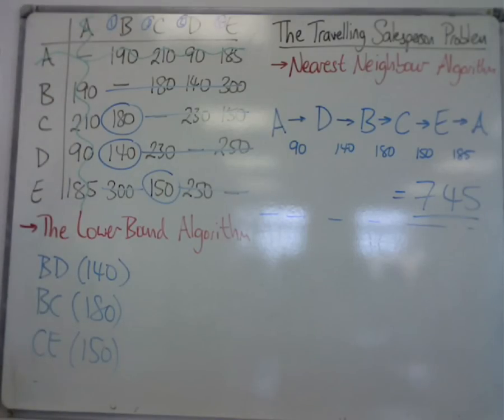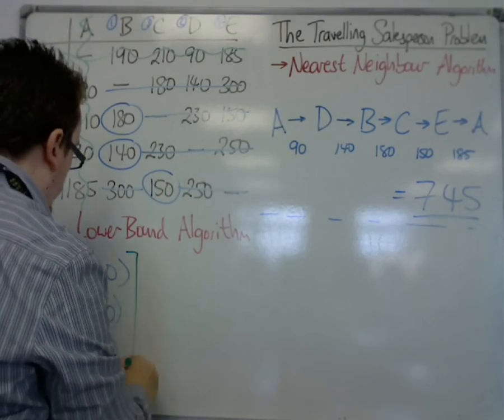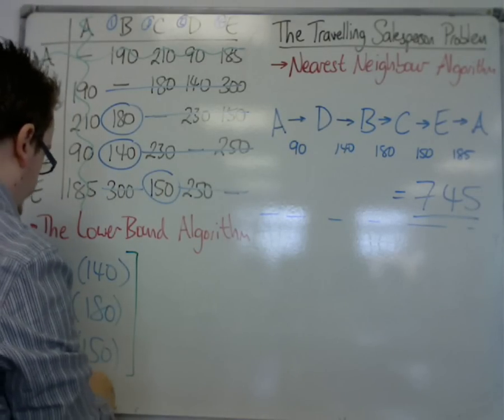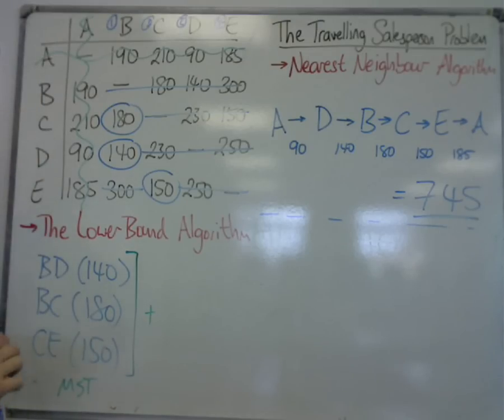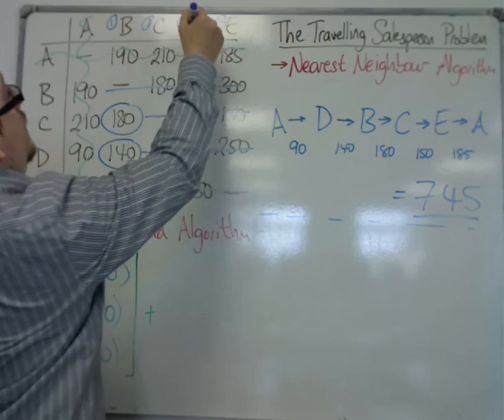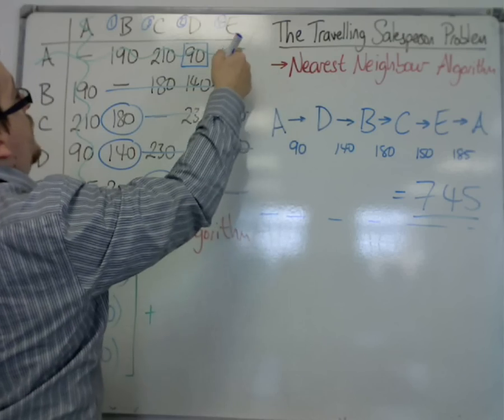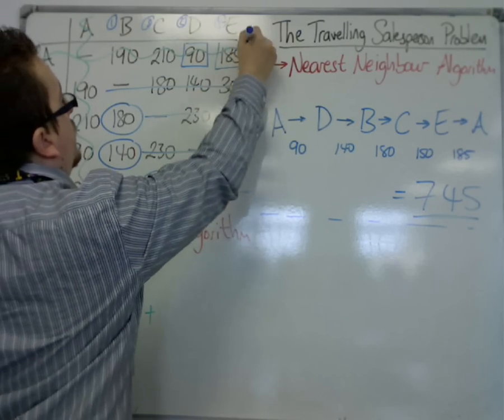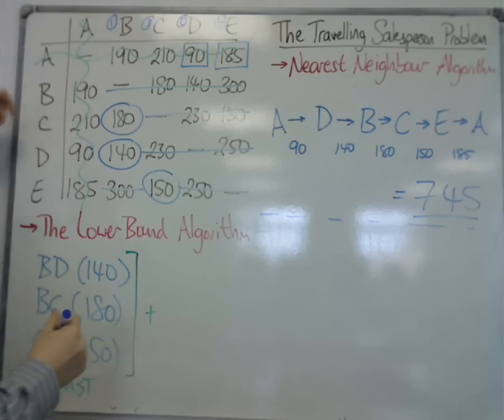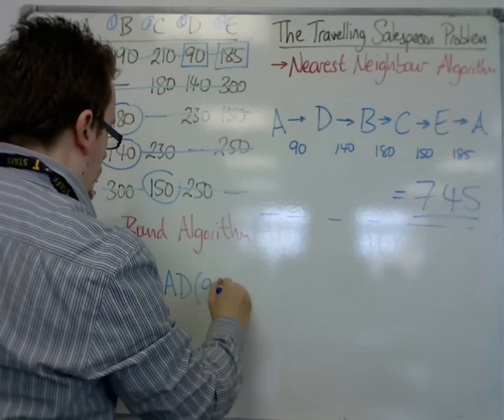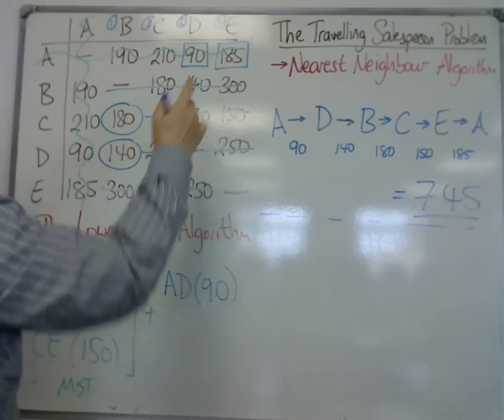So now these are the edges of my minimum spanning tree. Then I've got to add in the two shortest edges that connect A back to this minimum spanning tree. And these are 90 and 185. So AD and AE.